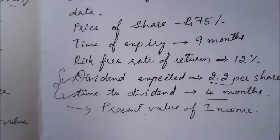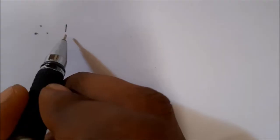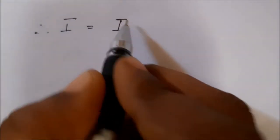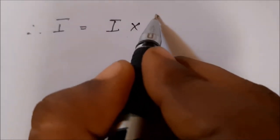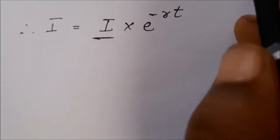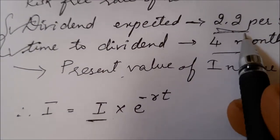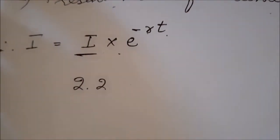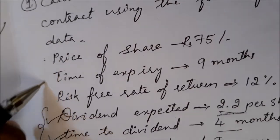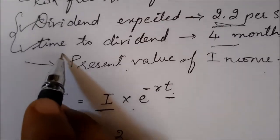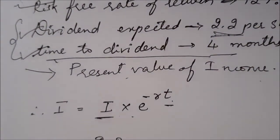We have to calculate the present value of income, i.e., I. The formula is I = income · e^(−rt), where income is nothing but the expected dividend. For calculating this, the rate is 12% and t is considered as 4 months only, since that is the time to the dividend payment. Let's see the solution.